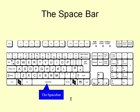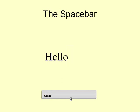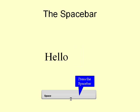Once you have typed a word, you will want to leave a space before the next word. You can do this by pressing the space bar at the bottom of the keyboard. This moves the cursor forward by one space and with it any text that appears to the right of the cursor.